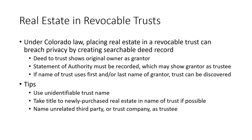If you want to keep your trust and the existence of that trust completely private and not associated with you, some common tips and tricks would be using an unidentifiable trust name that's not associated with your name. You may want to consider taking title to newly purchased real estate in the name of the trust, so that you don't have any initial deed and transfer deed with your name on it as grantor. Another thing you could consider — even though there is a cost — is naming an unrelated third party or a trust company as trustee, somebody whose name can't necessarily be traced to you, because your business arrangement with that trustee would be kept private as well.